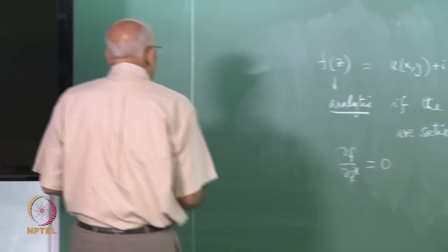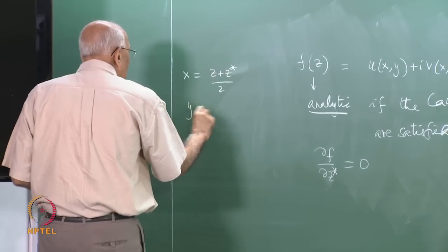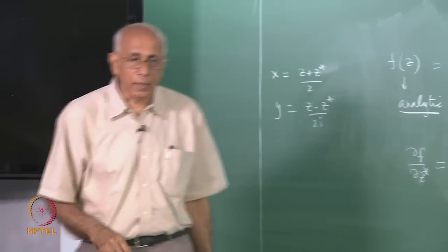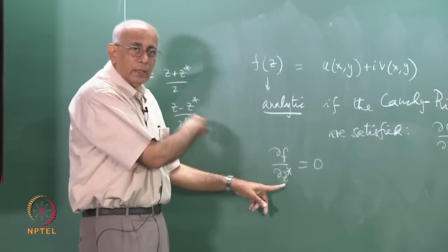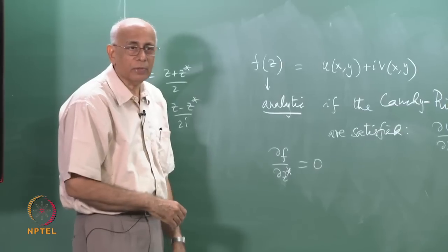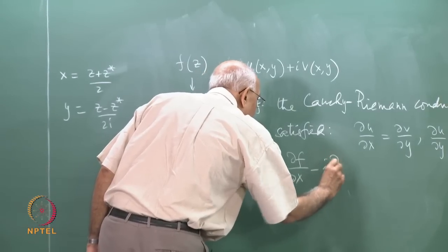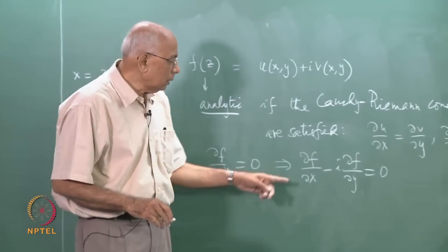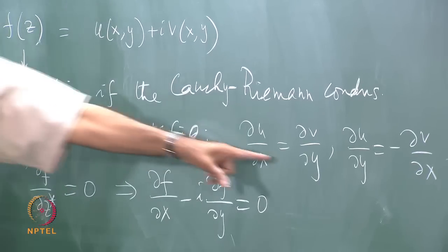We know that x equals (z + z*)/2 and y equals (z - z*)/(2i). Using the chain rule, ∂f/∂z* = 0 implies ∂f/∂x minus i ∂f/∂y equals zero. Setting f = u + i v and equating real and imaginary parts recovers the Cauchy-Riemann conditions.